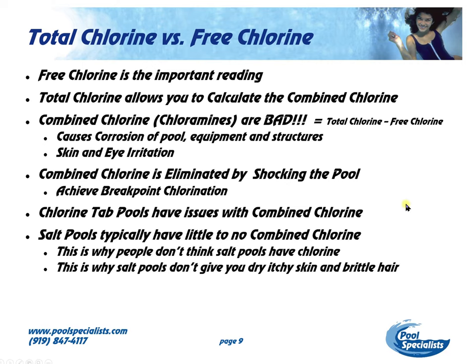Decreasing CYA — the solution to pollution is dilution. There are some products that claim to decrease the CYA; we've tried them and they work marginally. You can also use a product called alum — it's a clarifier that will coagulate all the garbage in your water and drop it to the bottom of the pool. Then again, you're going to want to vacuum it to waste.